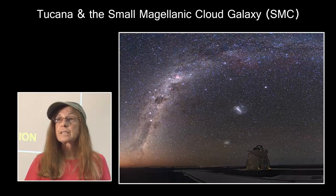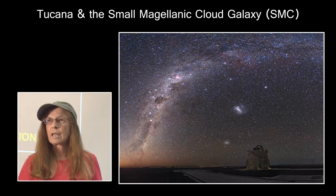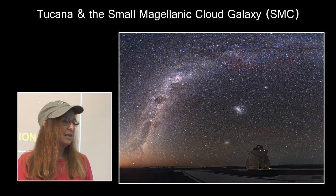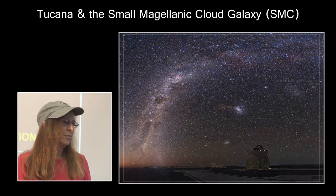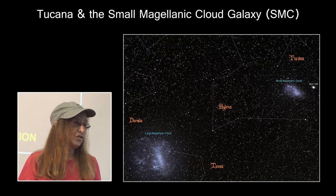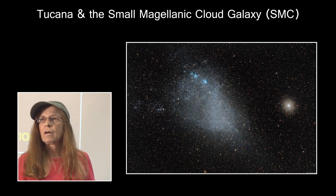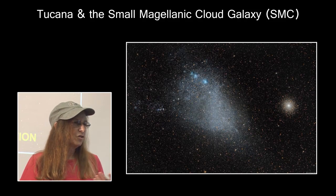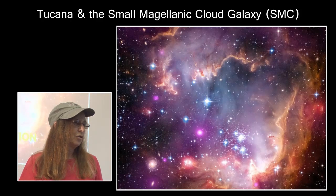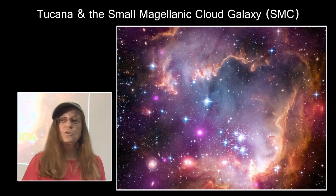Tucana is where the Small Magellanic Cloud resides. In this image we have both the Large and Small Magellanic Clouds — the Large Magellanic Cloud is 190,000 light years away and the Small one is 160,000 light years away. The Large Magellanic Cloud contains a huge star formation region, and here you can see it next to 47 Tucanae, the largest globular cluster associated with the Milky Way galaxy. The Small Magellanic Cloud doesn't look like much is going on from a distance, but when you look at it more closely it is really full of beautiful and energetic huge star formation regions.